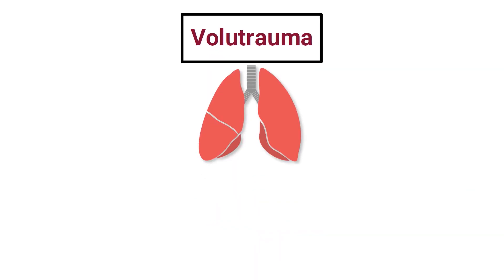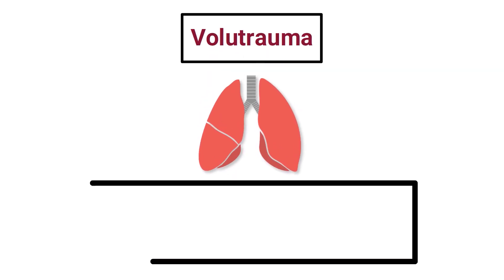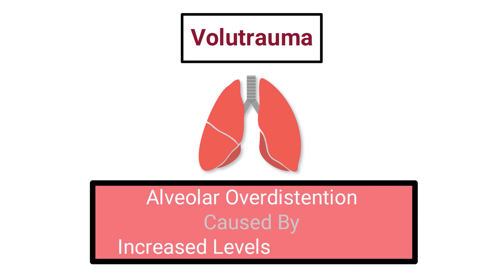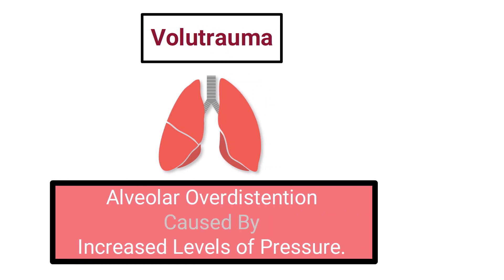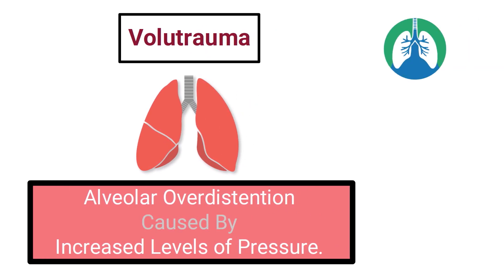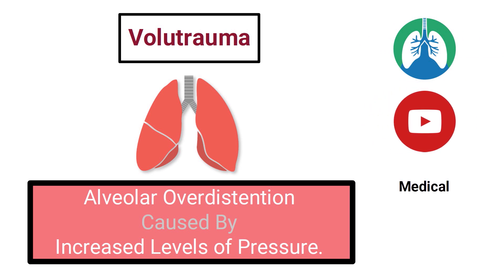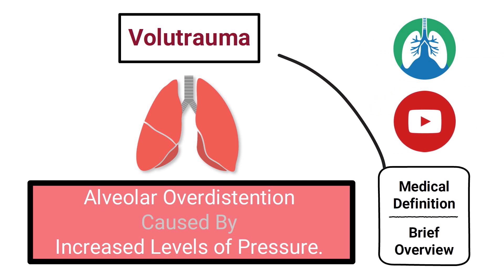Volutrauma is an injury to lung tissue that results in alveolar over-distention caused by increased levels of pressure. We created this video to cover the medical definition and provide a brief overview of this topic.